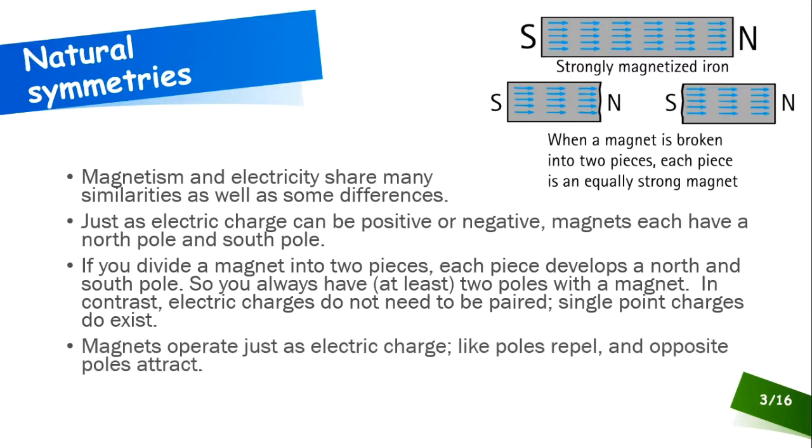But magnets do operate just like electric charge in that like poles repel and opposite poles attract. You take the north pole of two magnets and you try to put them together, you're going to feel resistance there. Same thing if you try to put two south poles together. However, if you put a north pole and a south pole next to each other, you get them close enough, and good luck keeping them apart. Like repels like, opposites attract.